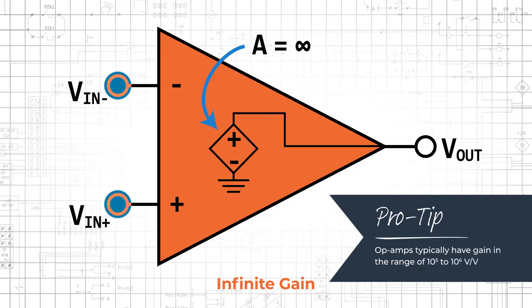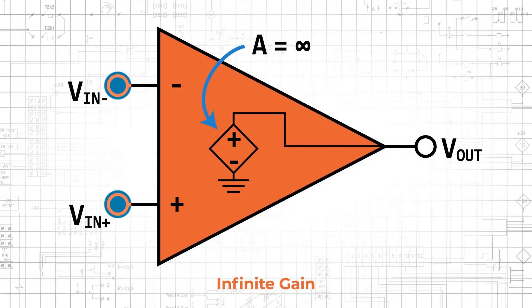Op amps typically have gain in the range of 10^5 to 10^6 volts per volt, and these gains are large enough that the actual closed loop gain of a negative feedback circuit is very close to the theoretical value.